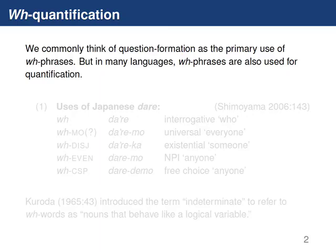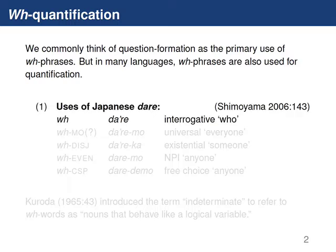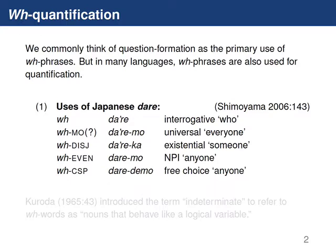We commonly think of question formation as being the primary use of WH phrases. But in many languages, WH phrases are also used for a range of quantification functions. In a particularly well-studied paradigm, in Japanese the word dare is regularly translated as 'who' and is used for questions with 'who', but we can also use that same word dare with a variety of different particles attached to it for a range of different quantificational functions.